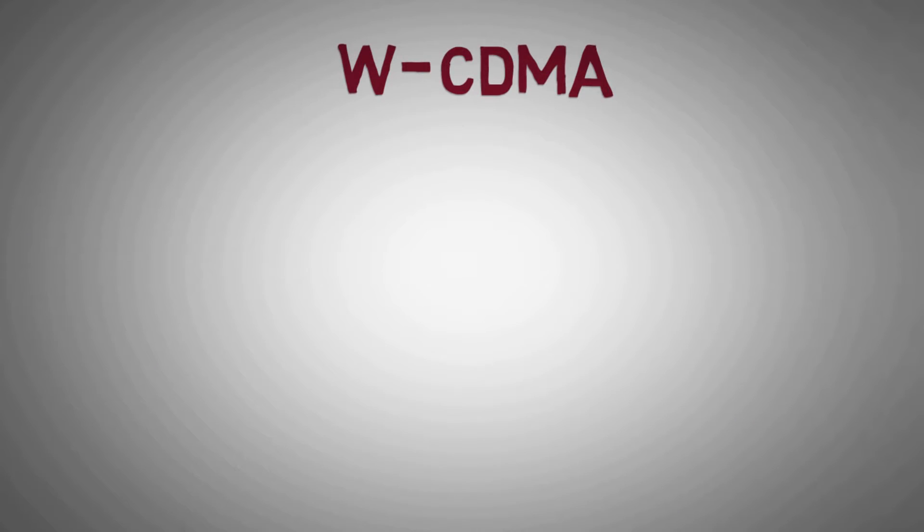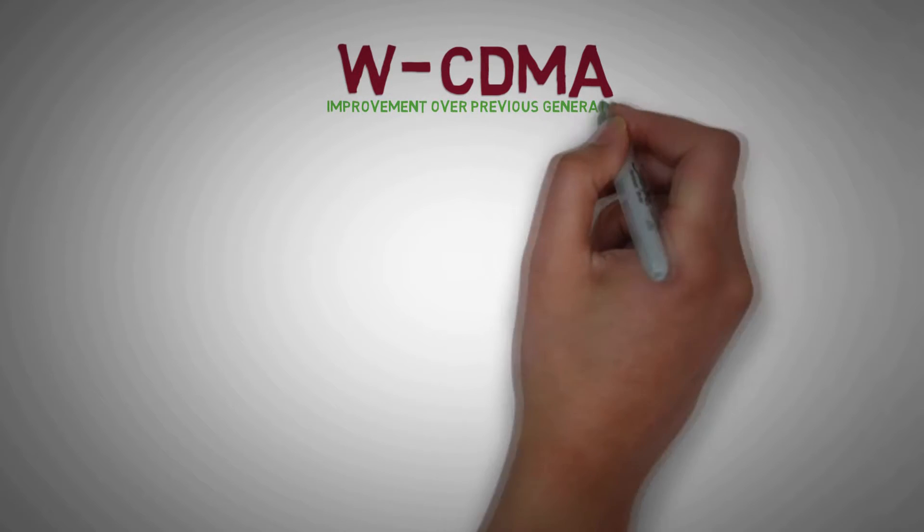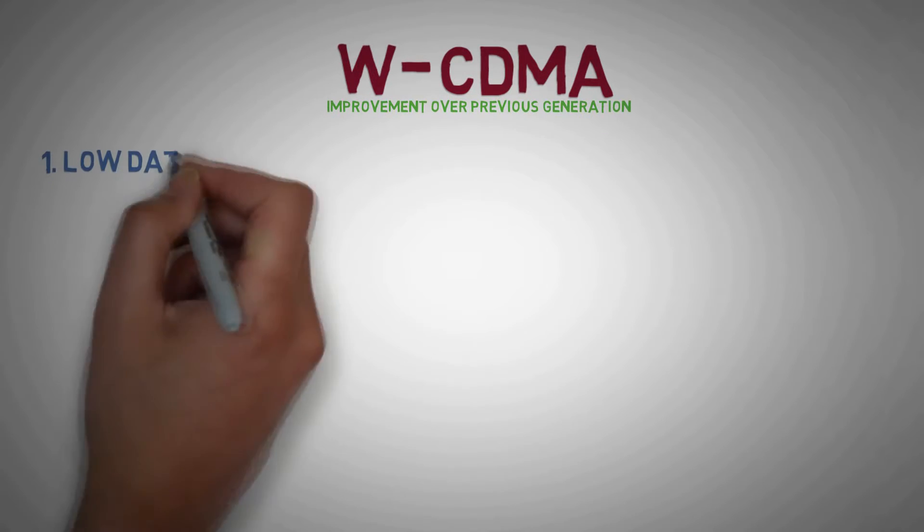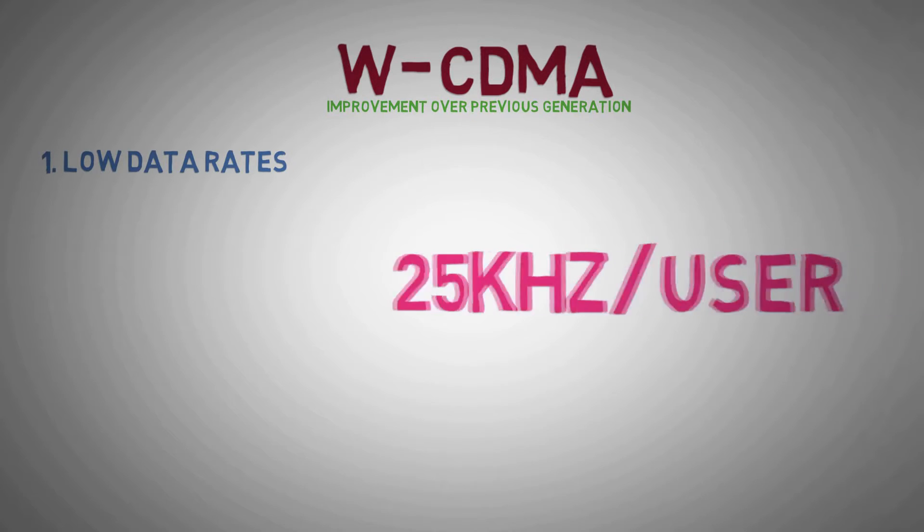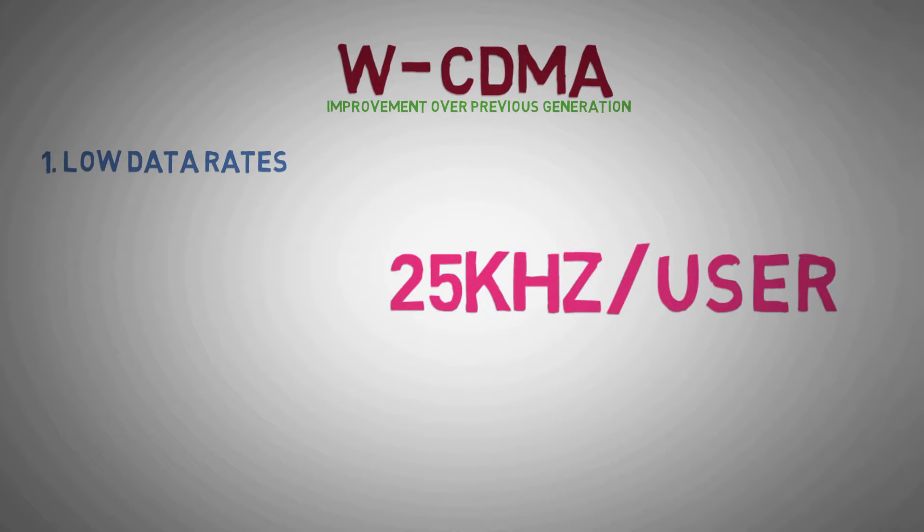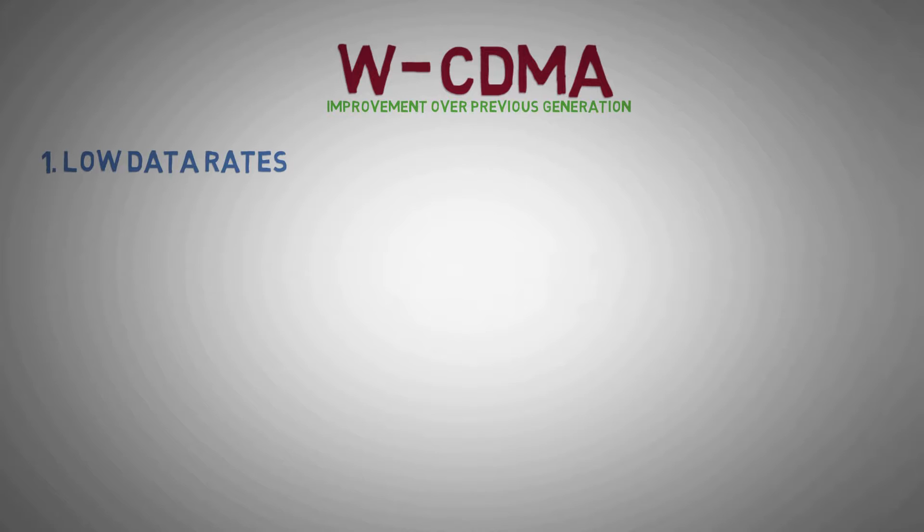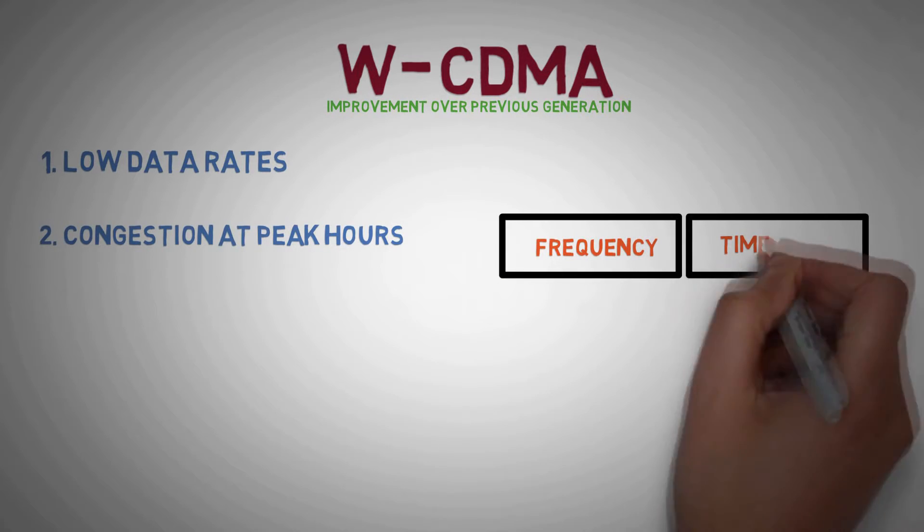WCDMA improved upon some of the problems of earlier generations like: first, low data rates, in GSM, effective bandwidth for a user was only 25 kHz. Second, congestion at peak hours, as the frequency chunks and time slots were very limited.